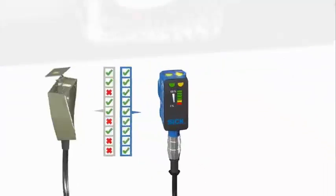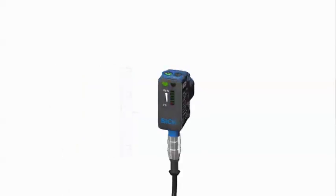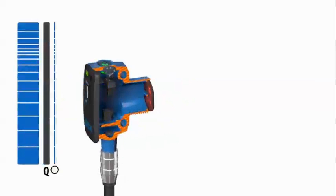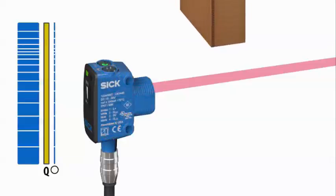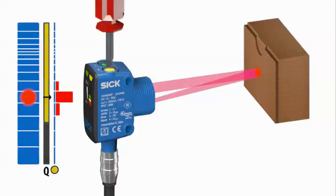SureSense photoelectric sensors solve this issue with superior background suppression technology. It uses a multi-segment receiver array to detect objects by triangulation of light versus traditional approaches based on the amount of light returned to the sensor.